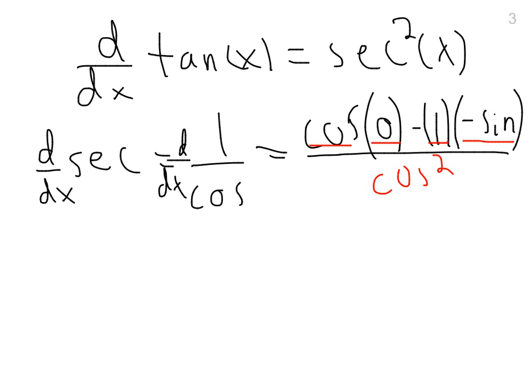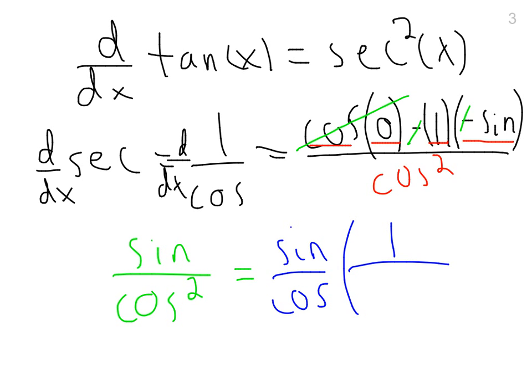So that first part cancels out, obviously you're multiplying by zero, the negatives cancel out, and you're left with sine over cosine squared. Now you might be tempted to leave your answer like that, but recall that tangent is sine over cosine, so that's equivalent to sine over cosine times one over cosine. I just factored out a cosine of the denominator. So this is tangent, and this is secant.